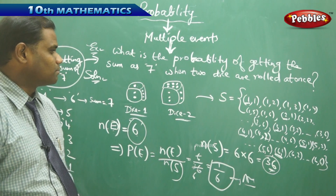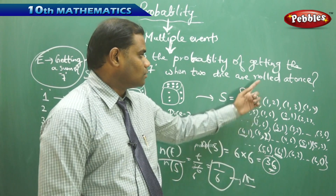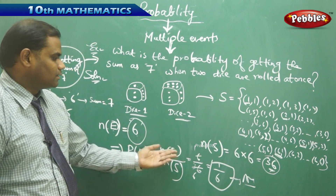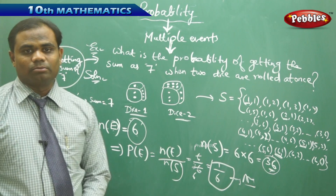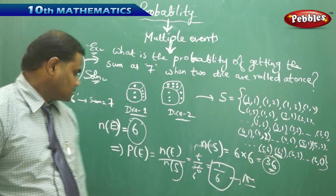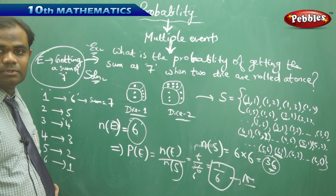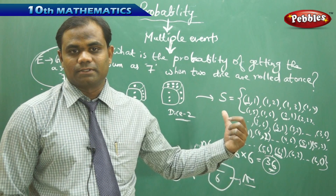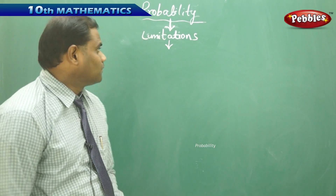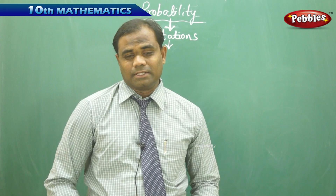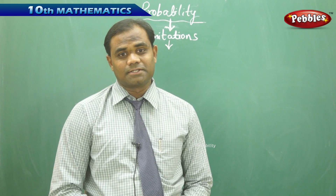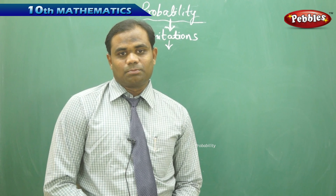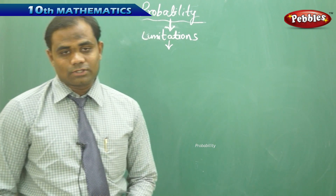This is how we solve problems involving multiple events — in this case 2 dice rolled at once. We identify the sample space and the favorable event outcomes to find the probability of getting a sum of 7. Now that we have completed the topic of probability, we move on to discussing its limitations.